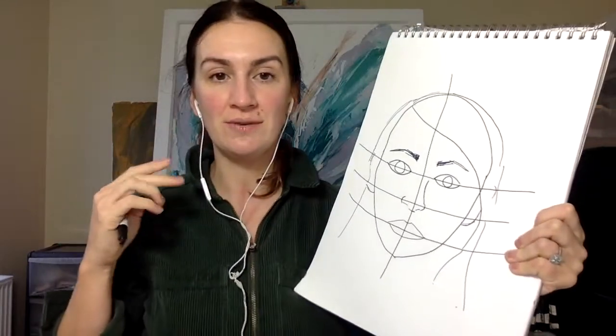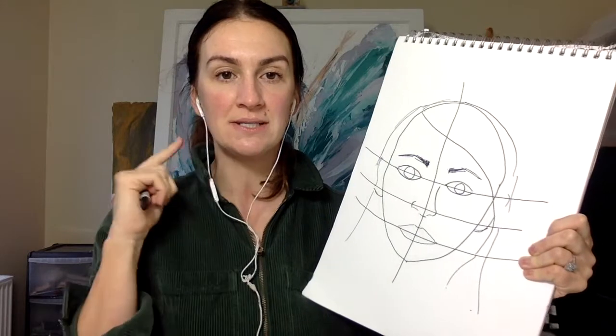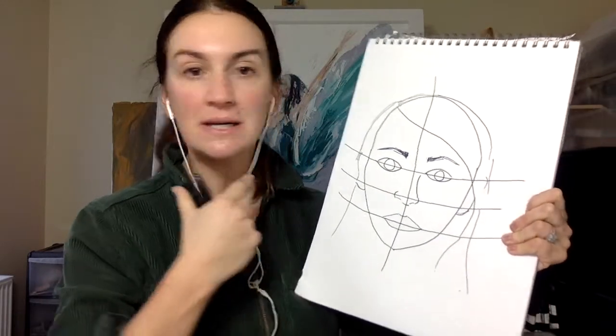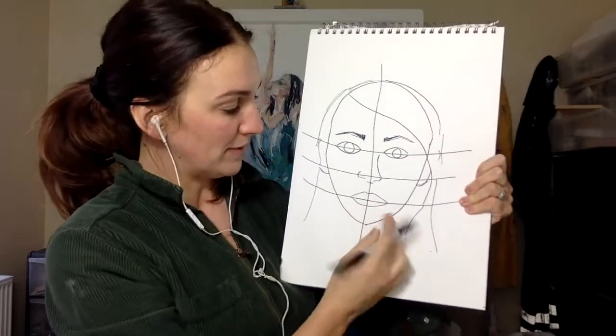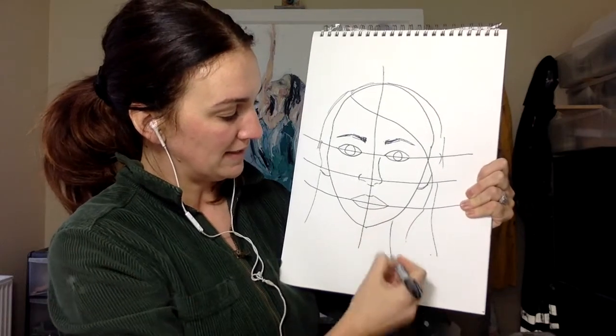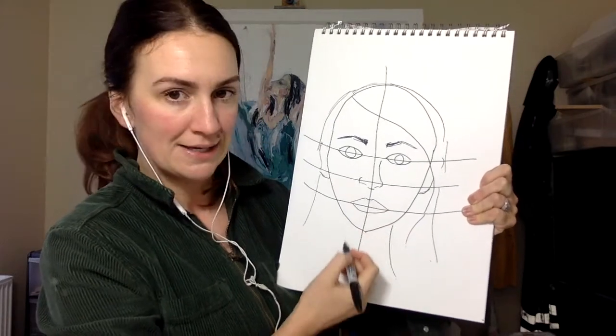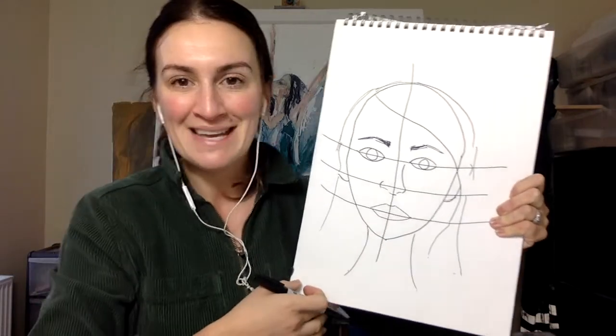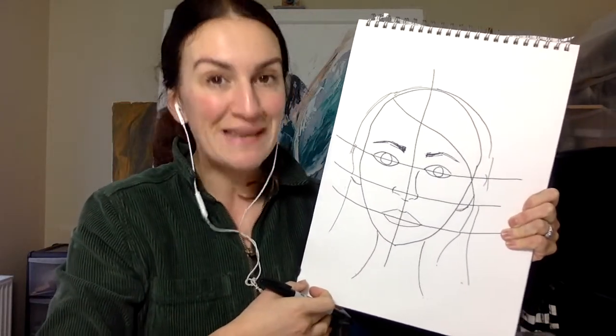And then we're just going to imply where the neck is. An easy way to do it is to try if you look at yourself here and where your mouth is just over to the side a little bit down, or else we can make it a little bit smaller. So I like to bring it just where the mouth is over to the side and down, you can just imply where that neck is but that is your basic face.